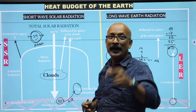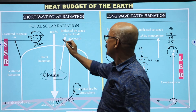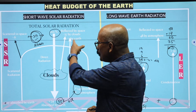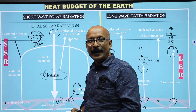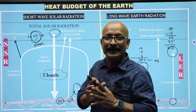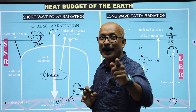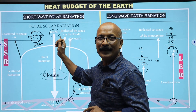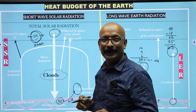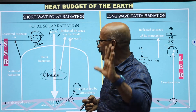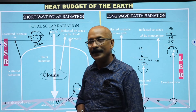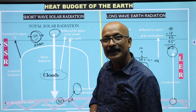I am going to put 100 units as total solar radiation. This is 100 units. When we take 100 units in total, this represents the original incoming solar energy.